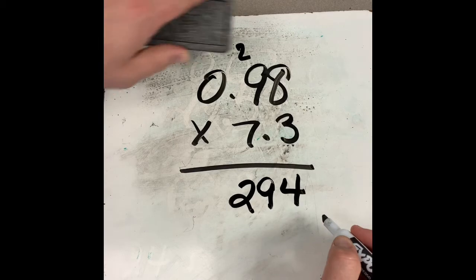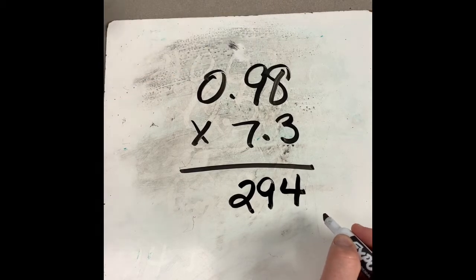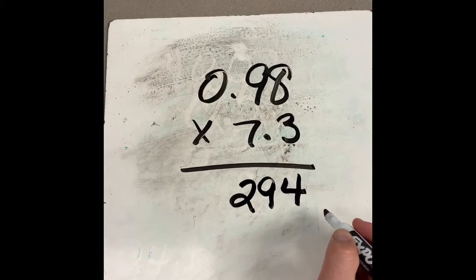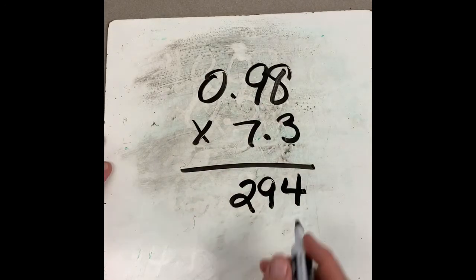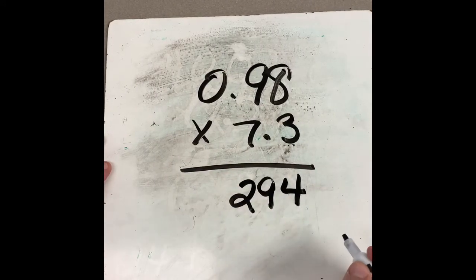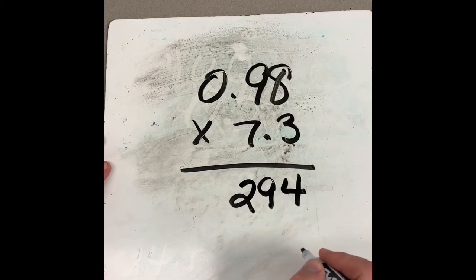Now, we don't have to worry about that zero out front, really. We can if it makes you feel good to keep the place. Three times zero would be zero, and you just throw a zero up top, but zeros to the left of my numbers always throw me off, so I generally tend to not worry about them.